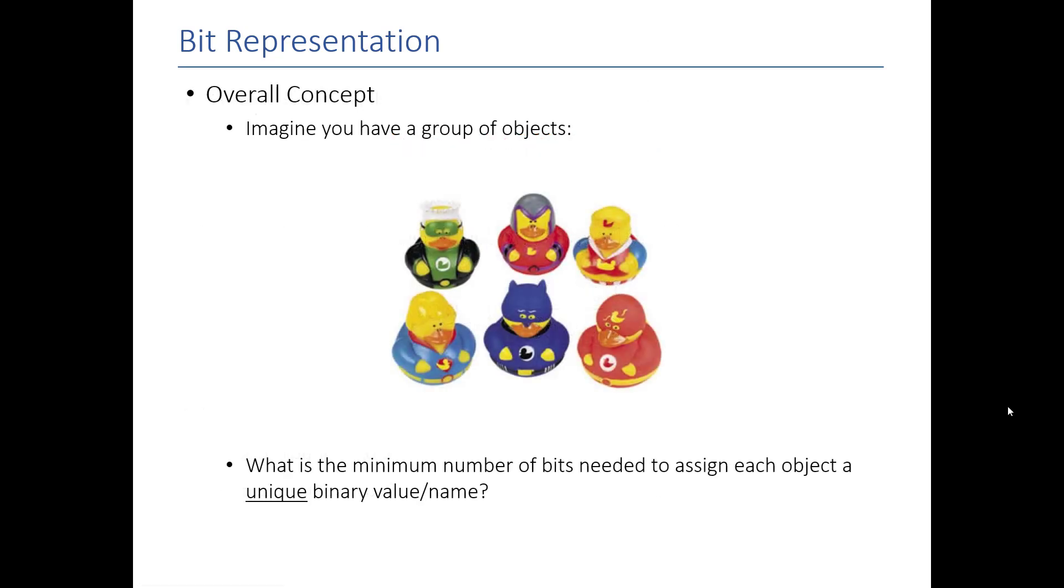But, there's an easier way for us to do it. Practically speaking, we can just kind of guess and check. So, for example, 2 to the 1, 1 bit's not enough. 2 bits isn't enough. I can only represent 4 of the ducks. But, if I use 3, I can do 8 unique values. I only have 6 ducks.